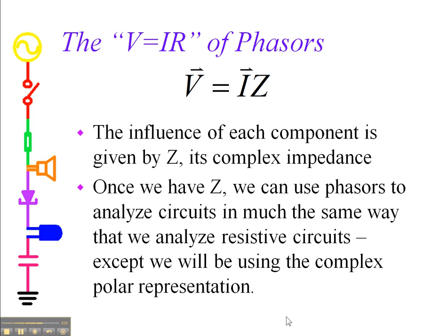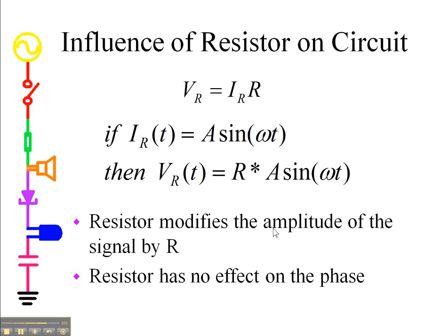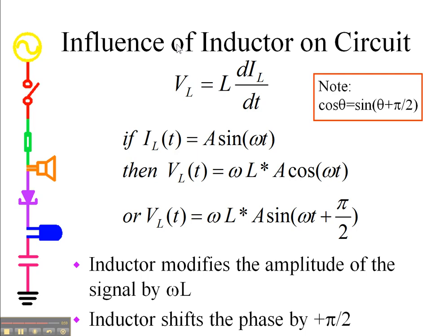Okay, so using phasor notation, we will characterize a circuit component with an impedance Z rather than a resistance, and we'll have a general form which will include a way of representing inductances and capacitances. And so rather than V equals IR, we have V equals IZ.